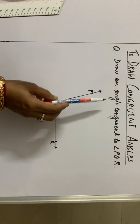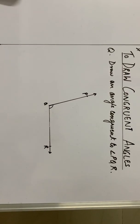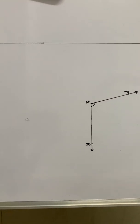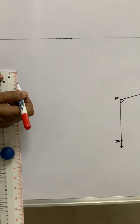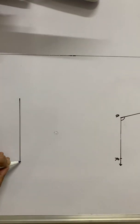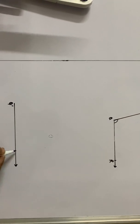So here, we have to draw an angle congruent to angle PQR. So this angle PQR is given. We have to draw an angle congruent to it. For that, first we will draw a ray. Let us name it as Q dash R dash.